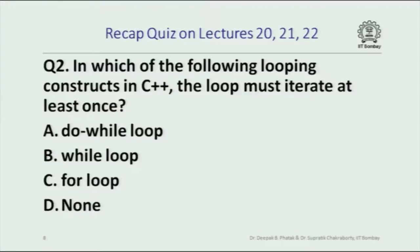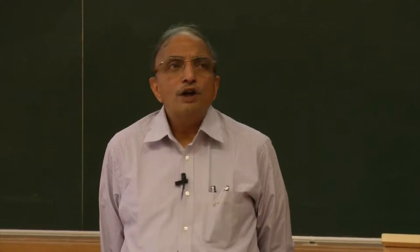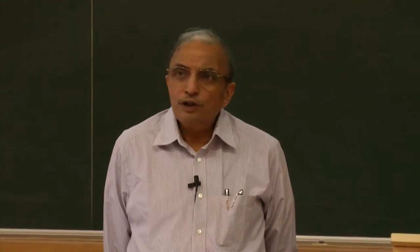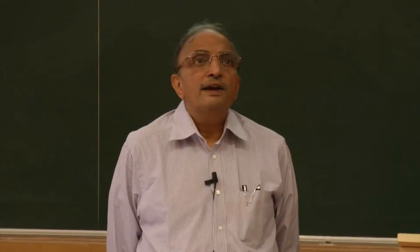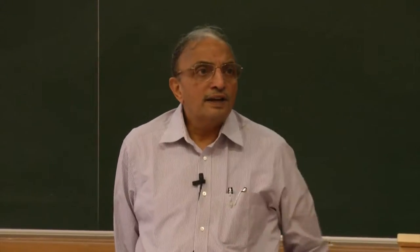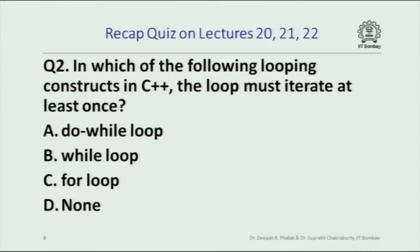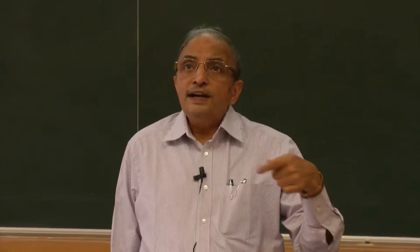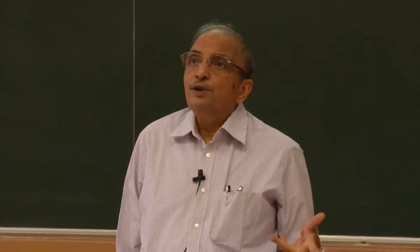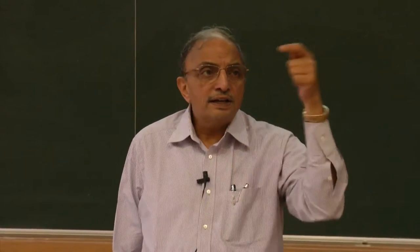The next question: in which of the following looping constructs in C++ must the loop iterate at least once? You have a do-while loop, a while loop, and a for loop. If you have seen the video, you should be able to answer this very easily — no logical thinking is actually required; this was very specifically mentioned when the constructs were explained. The answer is do-while. The do-while loop will execute the loop body at least once because the condition of exit or continuation is checked only at the end of the loop, after the body is executed at least once, whereas in other cases the exit condition is checked at the beginning.